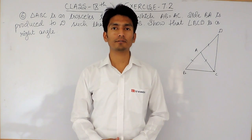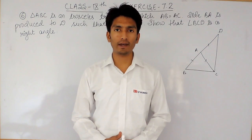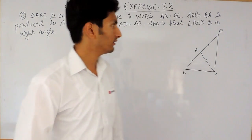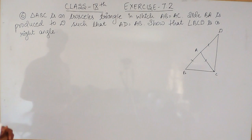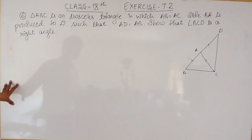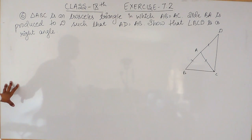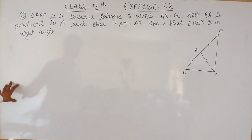Hello everyone, we are from True Maths and in this video we are going to solve question number 6 of exercise 7.2. The question says: ABC is an isosceles triangle in which AB equals AC. Side BA is produced to D such that AD equals AB. We have to show that angle BCD is a right angle.